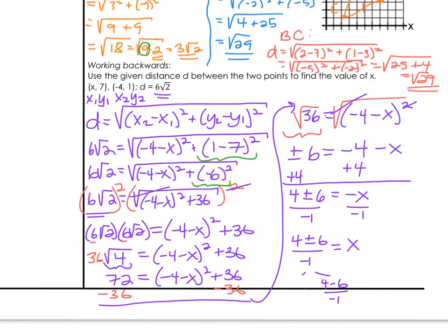4 plus 6, there we go, over negative 1. So (4 plus 6) over negative 1 would be 10 over negative 1 or negative 10. That's one option for x. 4 minus 6 is negative 2, but divided by negative 1 would be positive 2.